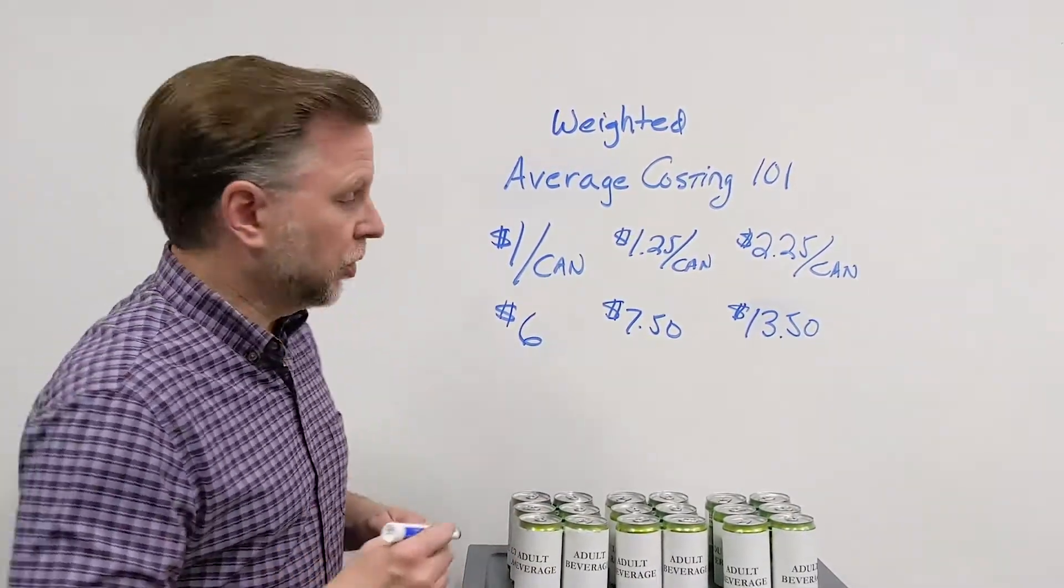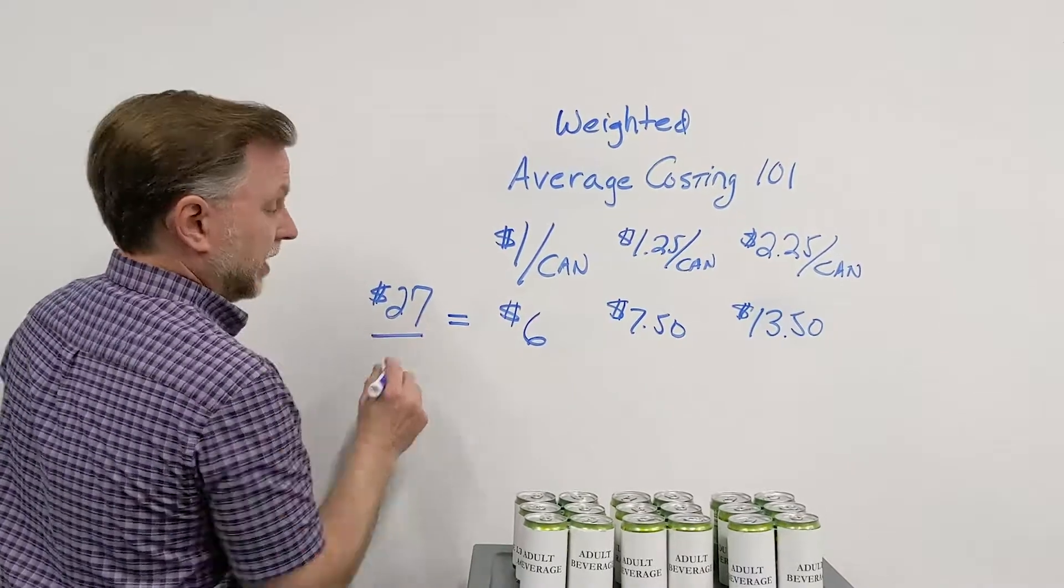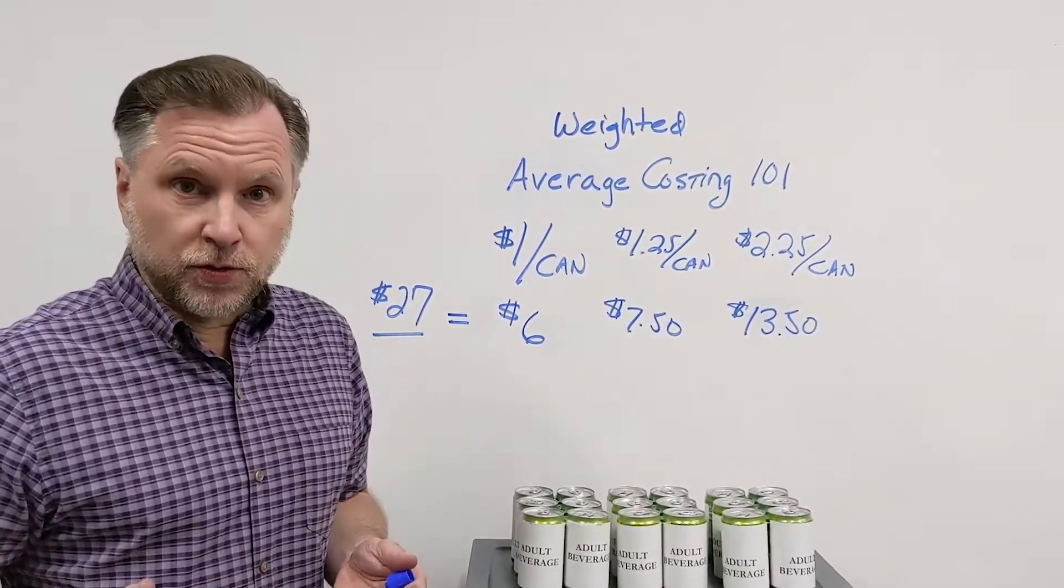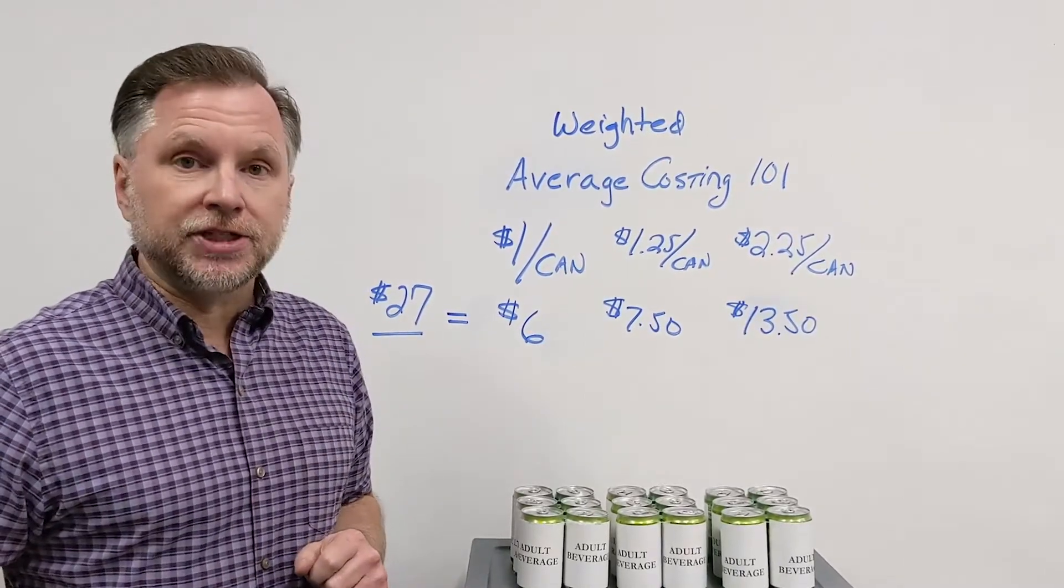Let's add up our inventory. It's $27. Now we have to divide that by the number of cans we have to come up with an average cost or a weighted average cost.